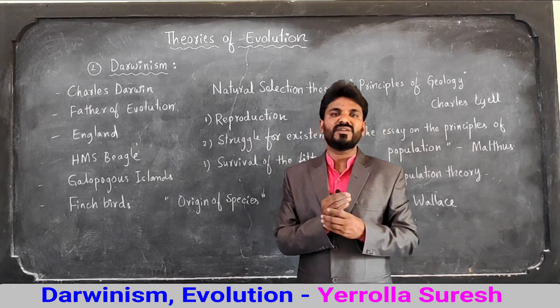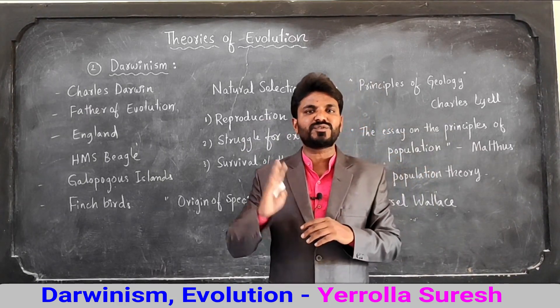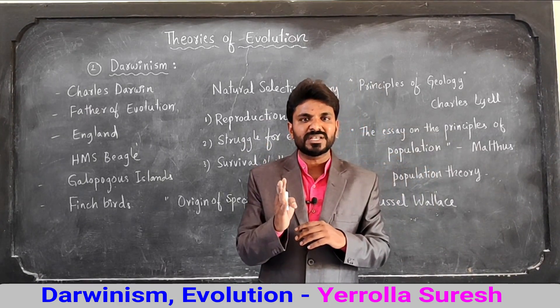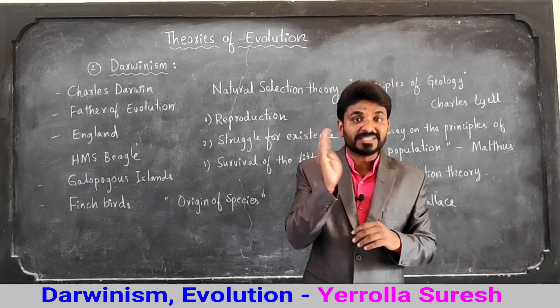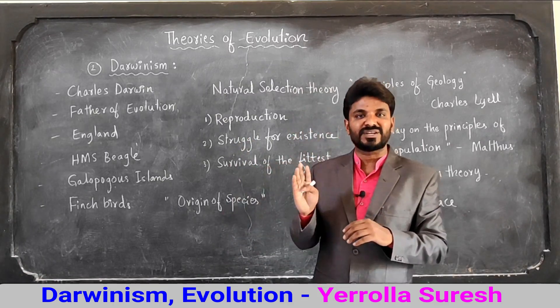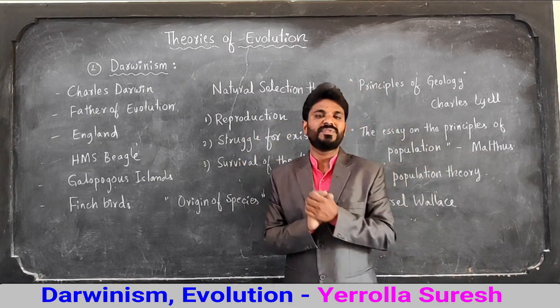Charles Darwin believes that evolution occurs as a result of smaller changes in every generation, which are selected by nature. That is what natural selection theory.